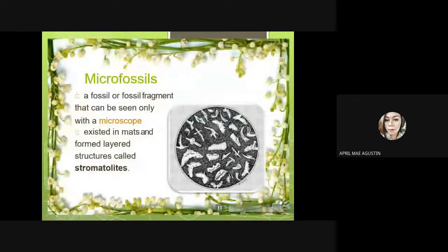A microfossil is a fossil or fossil fragment that can be seen only with a microscope. These microfossils existed in mats and formed layered structures called stromatolites.